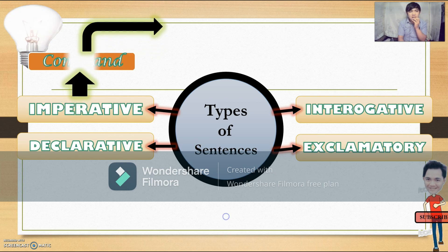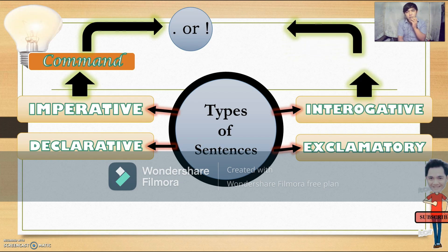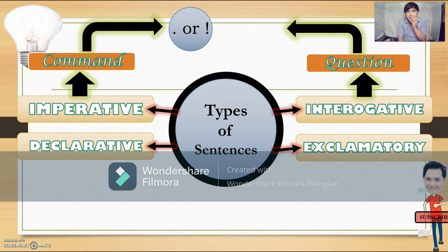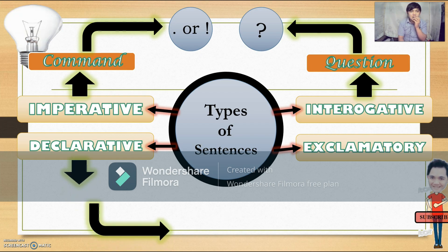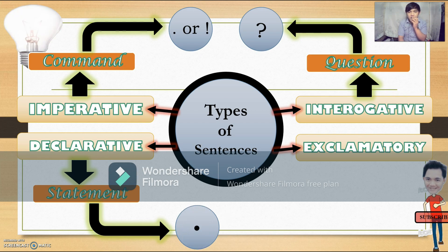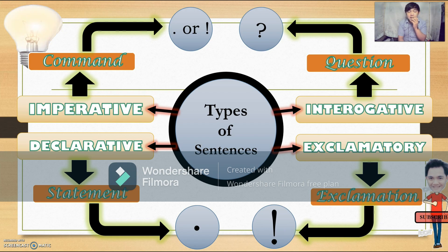For the imperative sentence, this is giving a command and it ends with a period or an exclamation mark. For the interrogative sentence, you are going to interrogate something or ask questions, so it ends with a question mark. The declarative sentence is a statement that ends with a period. And an exclamatory sentence is an exclamation that expresses a strong feeling, so it ends with an exclamation mark.